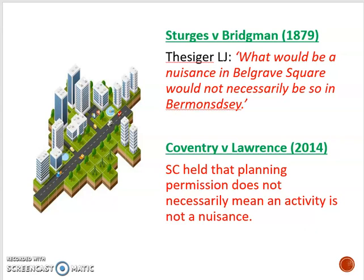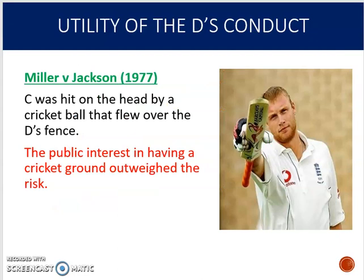Still on character of neighbourhood, Sturges v Bridgman from 1879 gives a famous quote worth using in an exam: 'What would be a nuisance in Belgrave Square would not necessarily be so in Bermondsey.' The point is you can't look at the smell or noise in isolation — you must consider where it's occurring and whether you'd expect that in that particular neighbourhood. In Coventry v Lawrence, the Supreme Court also confirmed that planning permission doesn't necessarily mean something is not a nuisance.